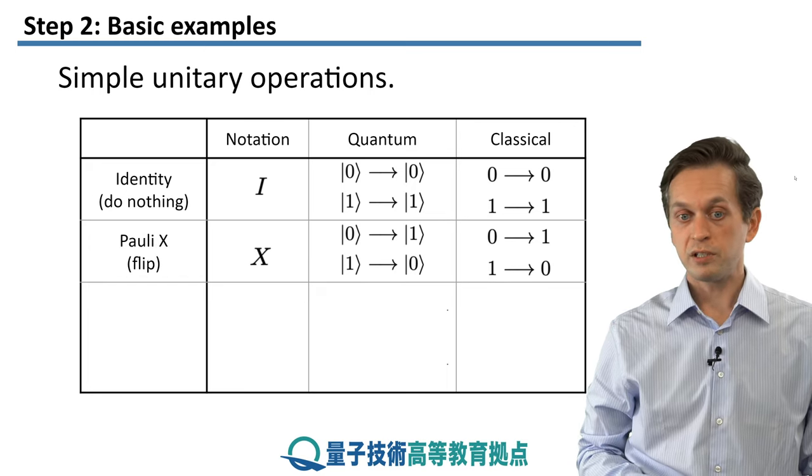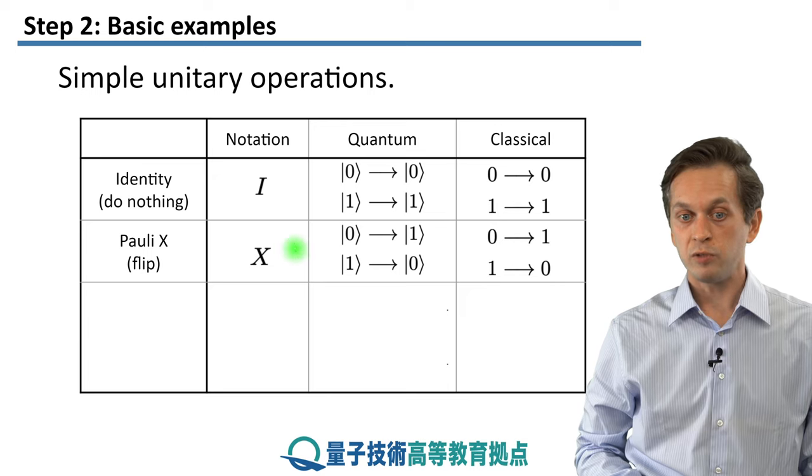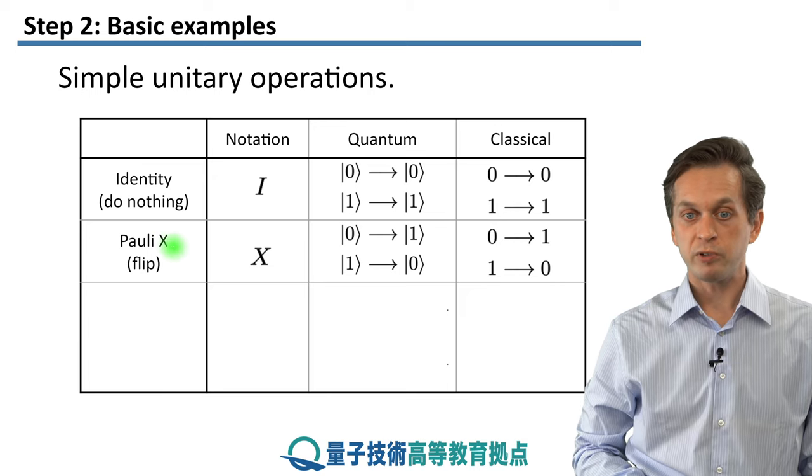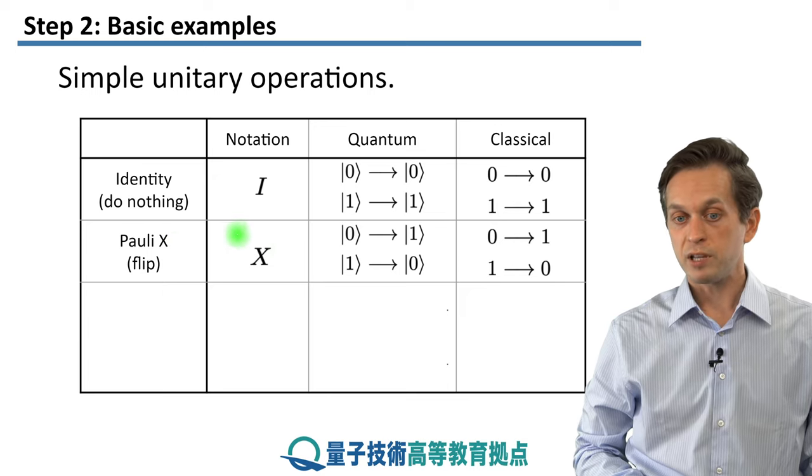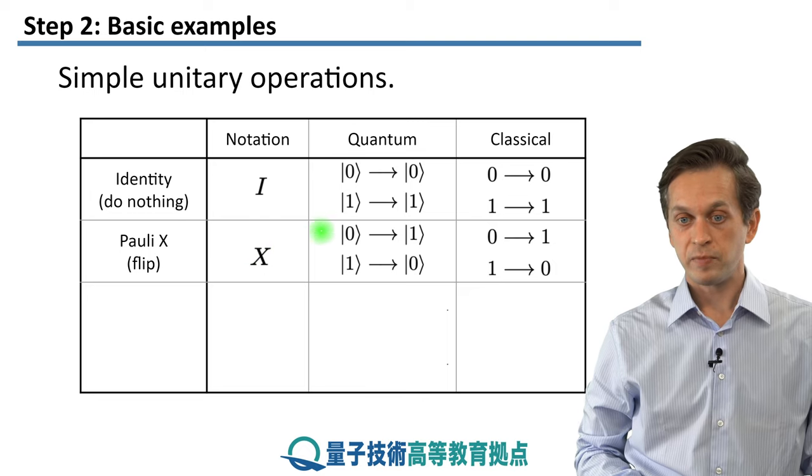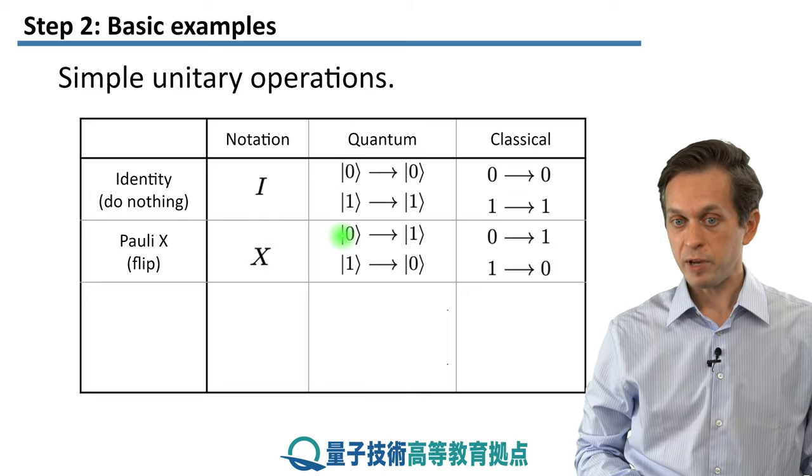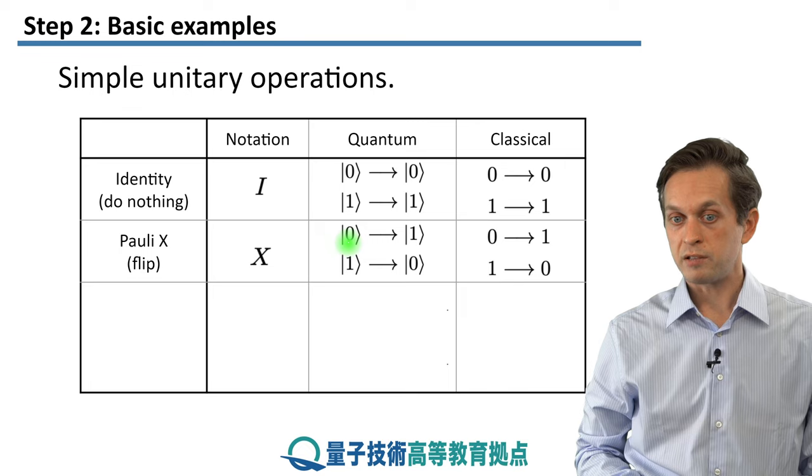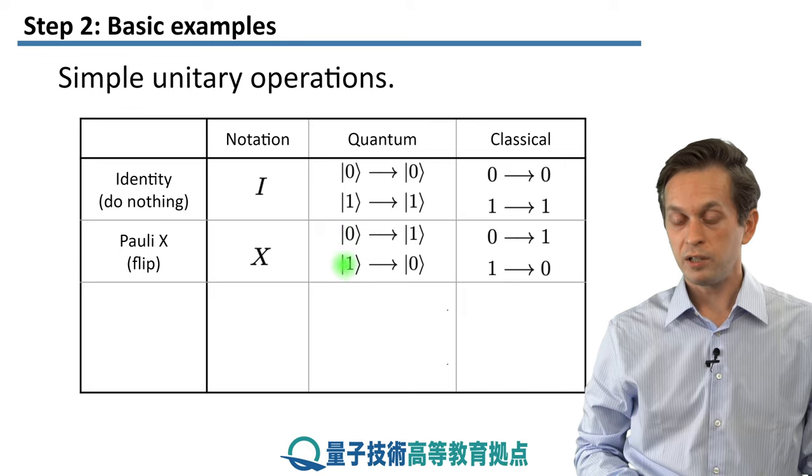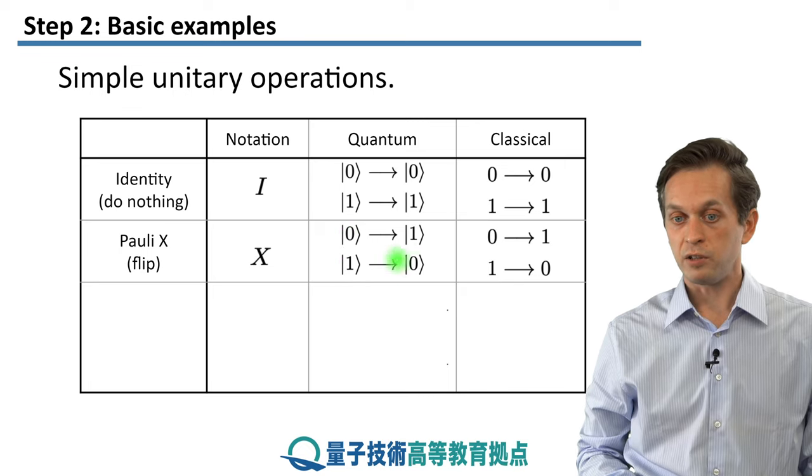Another very simple operation is the flip. Usually we call it either a flip or a Pauli X operation, and we represent it by a capital X. It does exactly what you would expect: it takes the input ket 0 into an output ket 1 and vice versa, ket 1 into a ket 0.